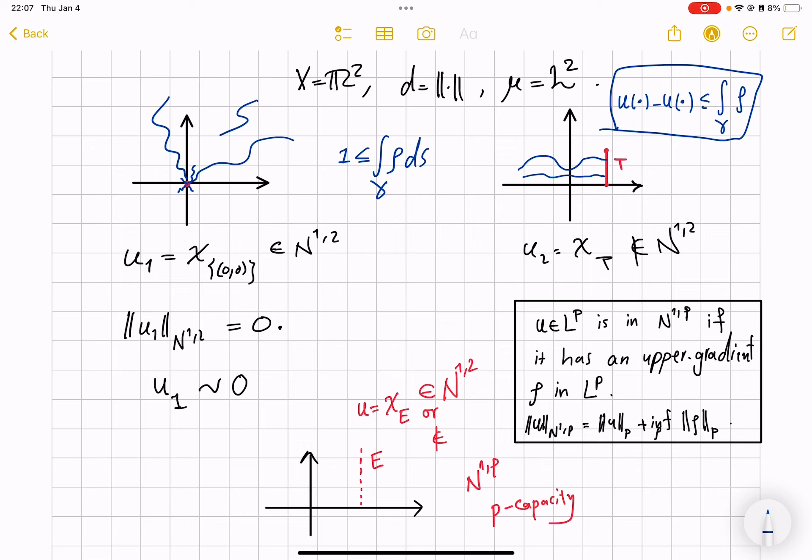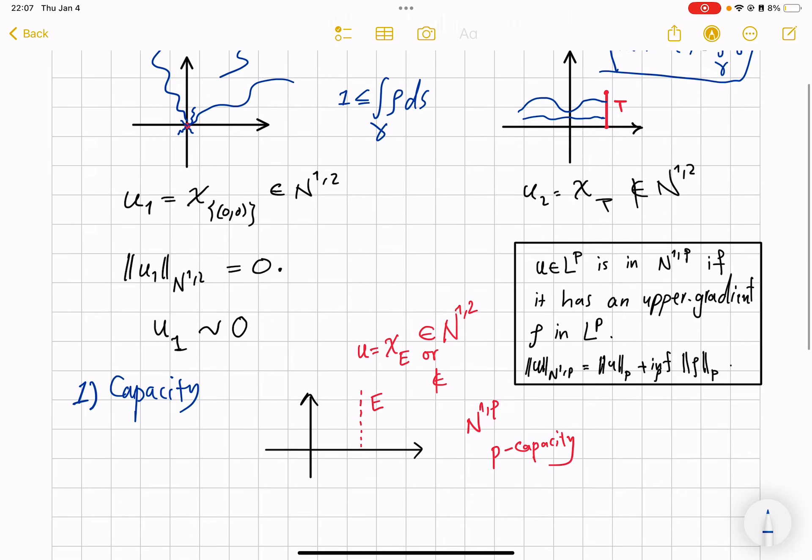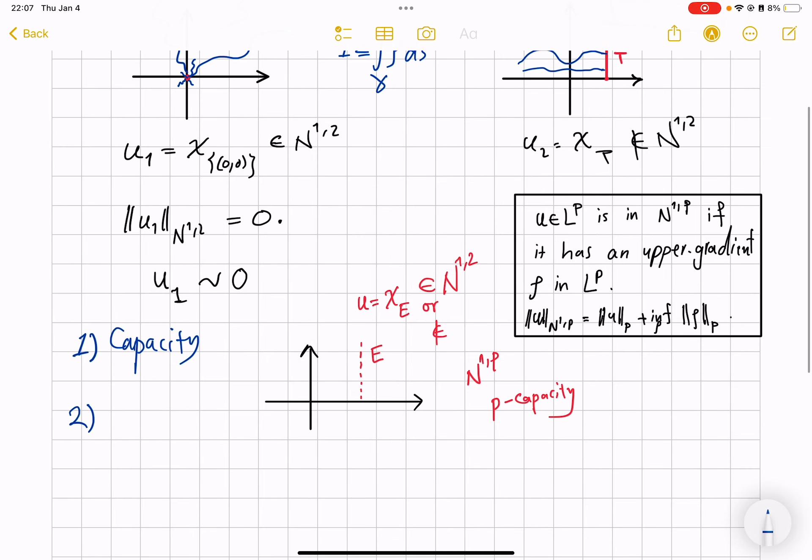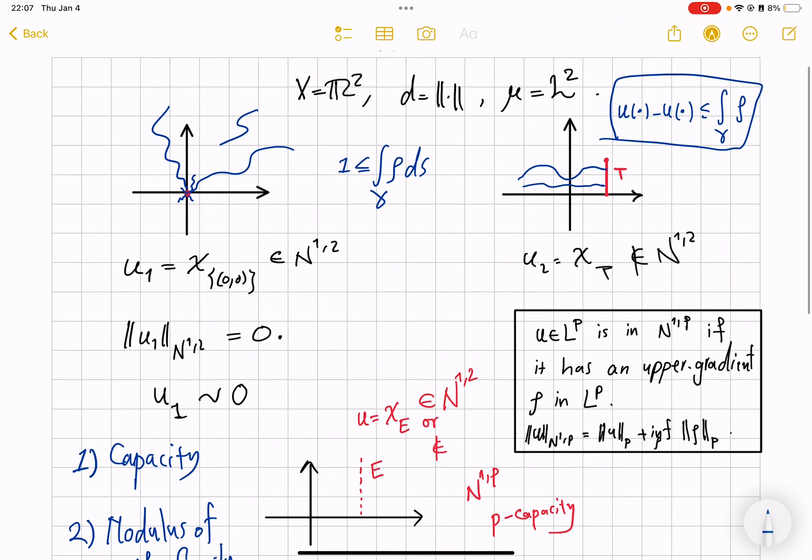And that leads us to the notion of modulus of curve families. So notion one was capacity of sets. And notion two, by the way, these two are related, not surprisingly, so the modulus of path families will give us a way to just look at this example and immediately say,